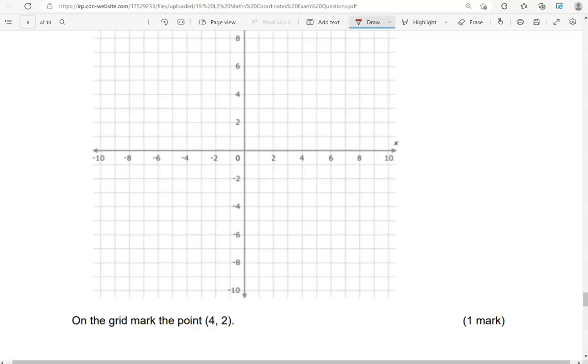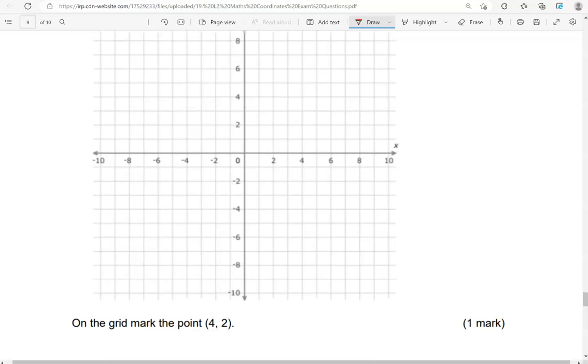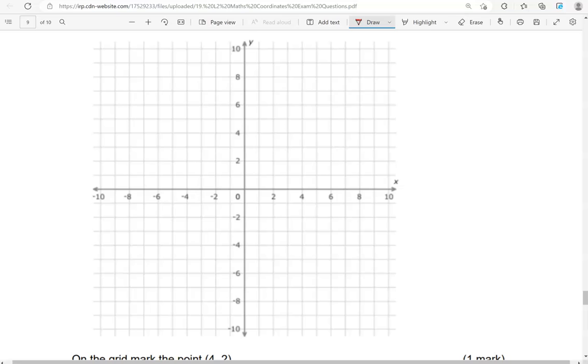On the grid, mark the point (4, 2). So four is the x-coordinate, so there is four, so we're going to go up to two. So that's the point there. I'm going to remove these lines.